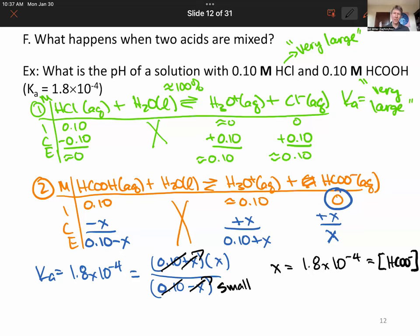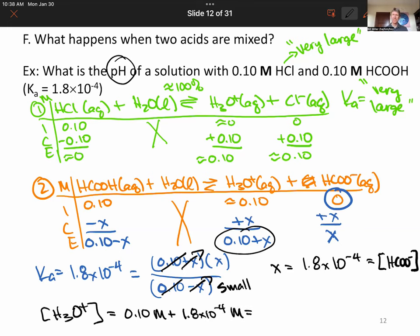It is not the concentration of hydronium though this time. Concentration of hydronium is 0.10 plus X. And since that's what we're looking for, since we need to calculate pH, it's going to be 0.10 molarity plus 1.8 times 10 to the minus 4 molarity, which is so small that's why we ignored it. We still get 0.10 molarity.